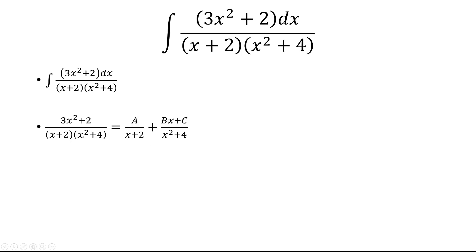So x plus 2, if we set that equal to 0, we get a real root. So that's why we put A on top. x squared plus 4 has no real roots, so we put Bx plus C.